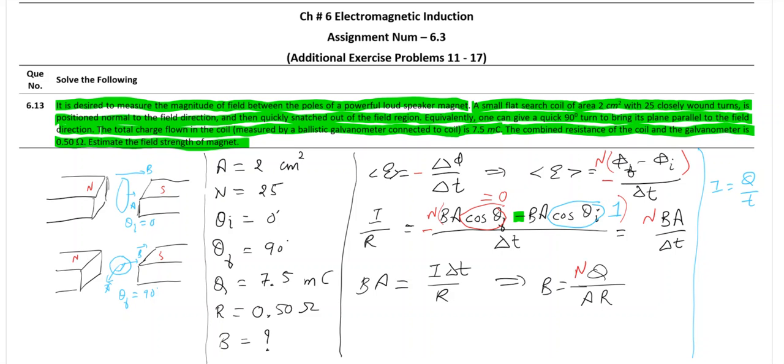So substitute all the values. I think we have everything given. N is given 25 turns. Area is also given 2 centimeters square. Don't forget to convert it into meter square. We have R also available 0.50 ohm. Q is also given. So substitute all the values, carry out answer and don't forget to mention unit Tesla.